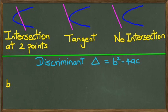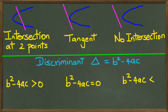And you might also remember that if b squared minus 4ac is greater than zero, then that's when intersection at two points happen. And if b squared minus 4ac equals zero, then it is a tangent. And finally, if b squared minus 4ac is less than zero, then that means there's no intersections.